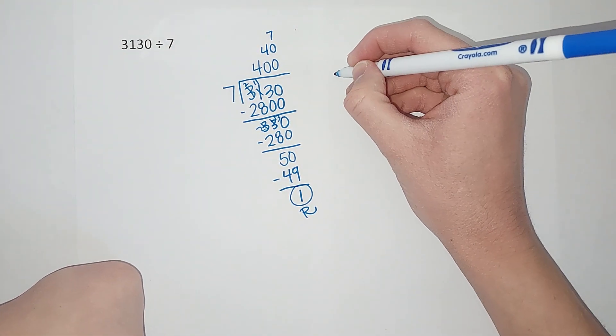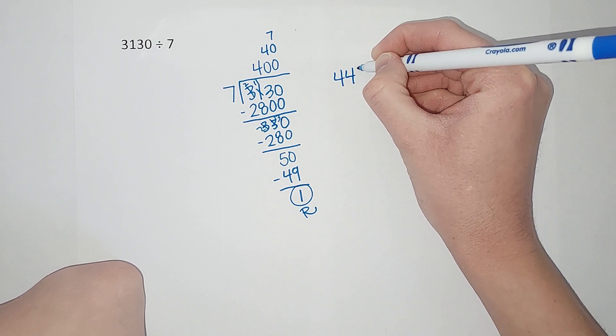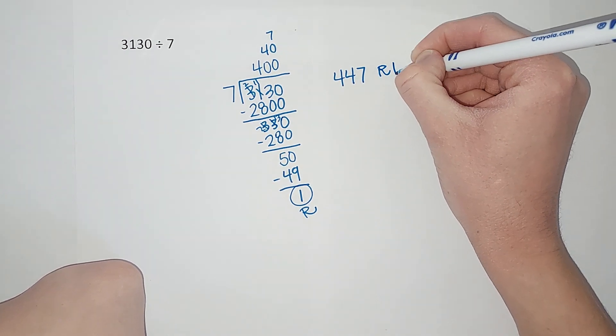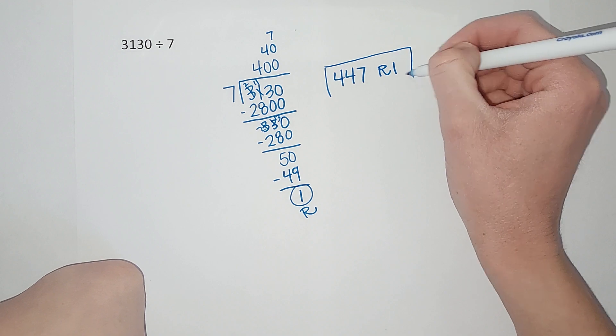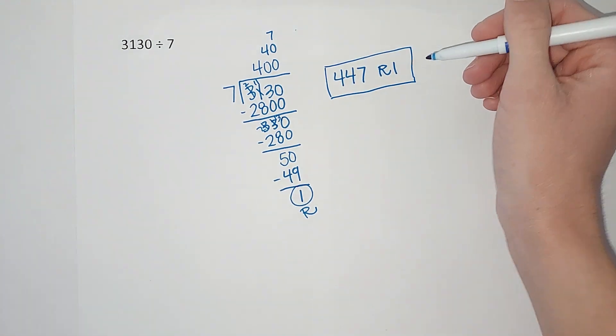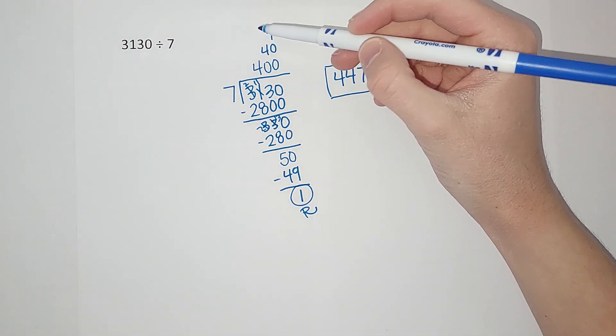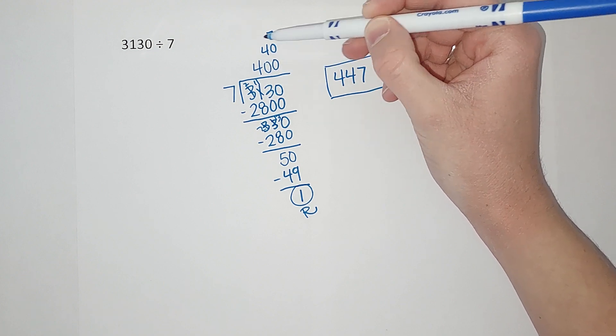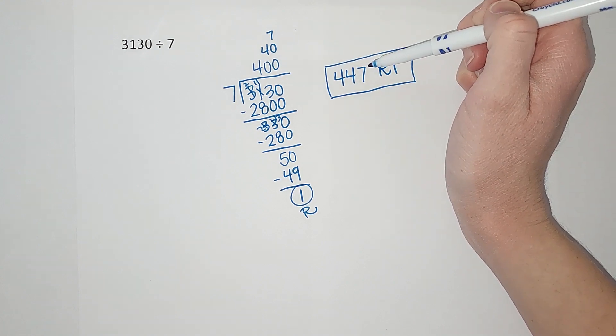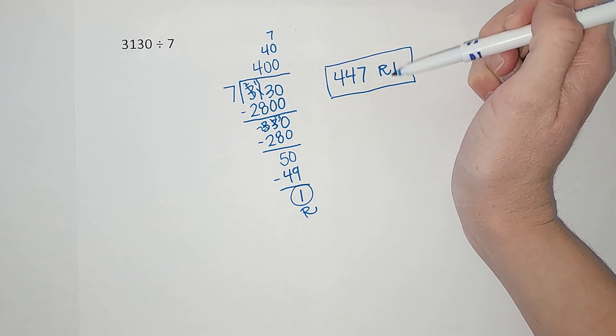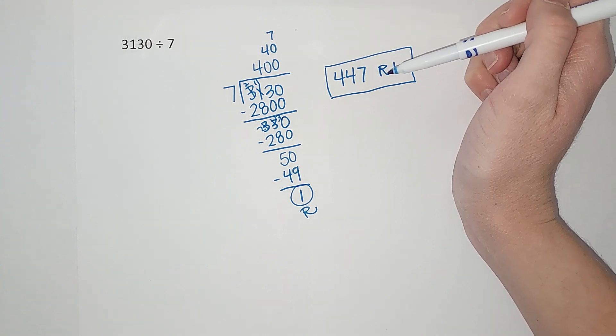I'm gonna add these together, so I end up with 447 remainder one. Okay, the thing that is so cool about this is 10 different people could do this problem and get different numbers up here that all add to 447 with a remainder of one. That's what's so cool.